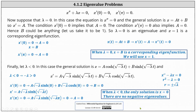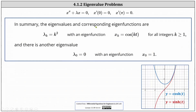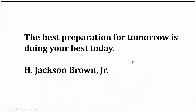To summarize our findings: the eigenvalues and corresponding eigenfunctions are lambda sub k equals k squared with eigenfunction x sub k equals cosine kt, for all integers k greater than or equal to 1. There is also the eigenvalue lambda sub 0 equals 0 with eigenfunction x sub 0 equals 1. Thank you.